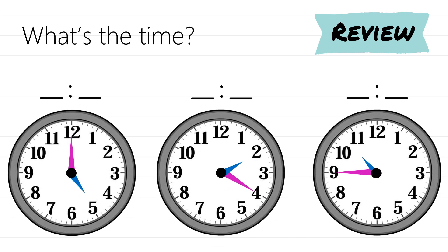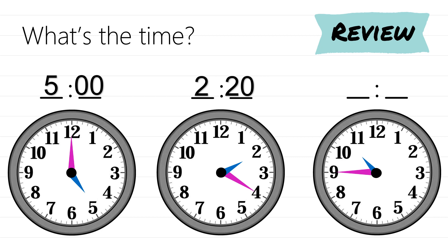Now I'm going to review back on the telling time you learned before. The first clock on the left side — the hour hand is pointed at five, so it's five o'clock as the minute hand is pointing at number 12. If the minute hand is pointing at number 12, the minutes are zero, so it's five o'clock. The second clock shows 2:20. The last clock on the right — the hour hand is pointed at 10, it's not reached 11 o'clock yet, so it's still 10, and the minute hand is pointing at 9, so it's 45 minutes — 10:45.